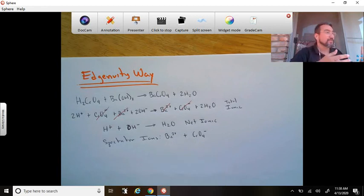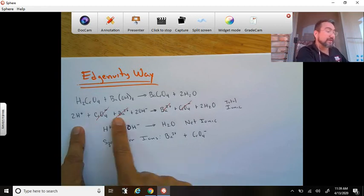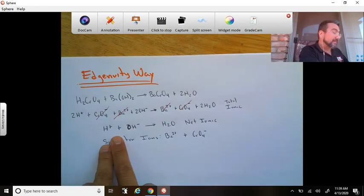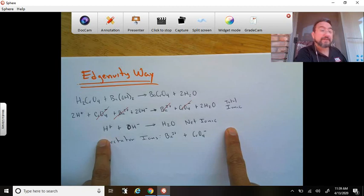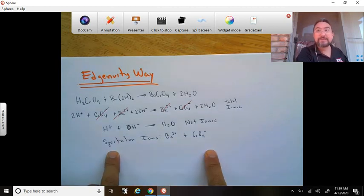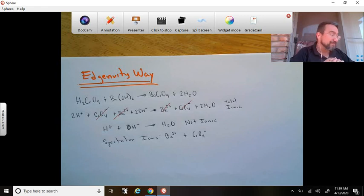Okay, so if you get this question during the assignment, which I'm not taking for a grade, or during the quiz—and the quiz I am taking for a grade—just remember this is what they expect in Ingenuity: that's the total ionic, that's the net ionic, and those are the spectator ions. So I'm just telling you so you know and you can answer that question right. That's it, I'll talk to you guys later.